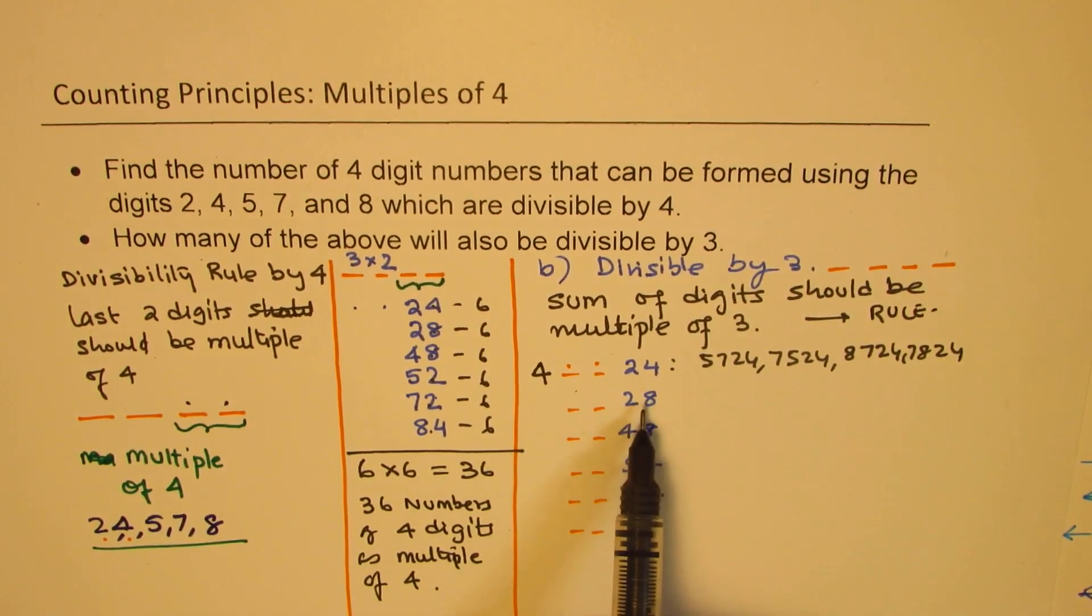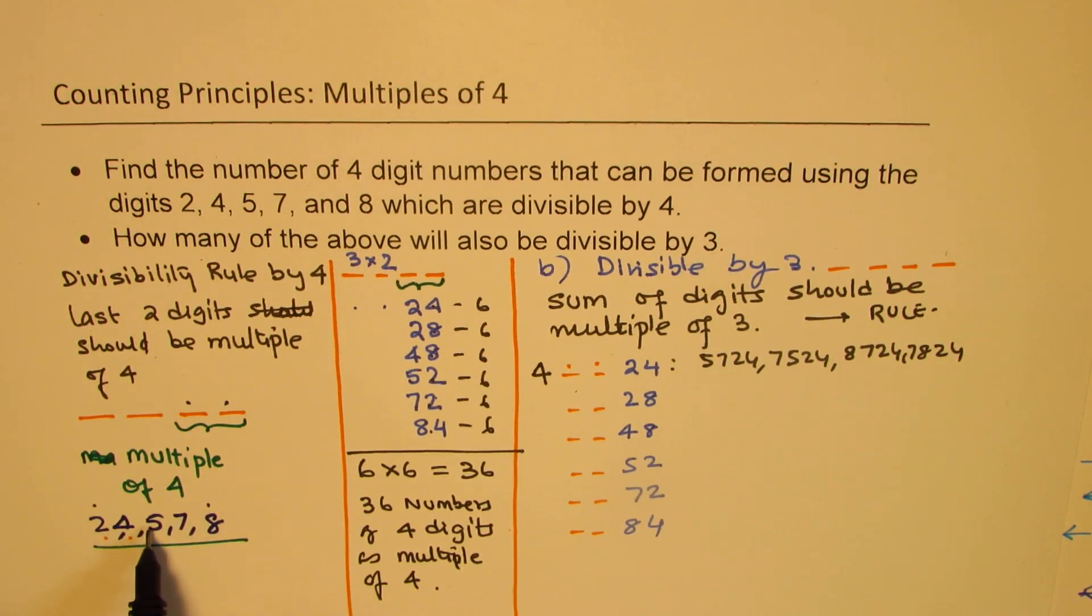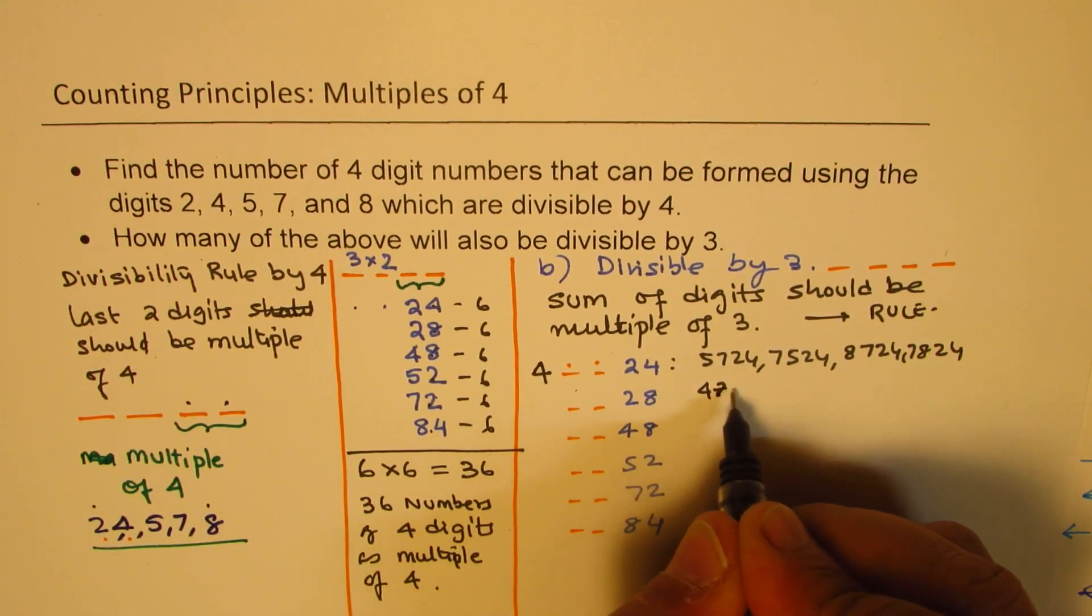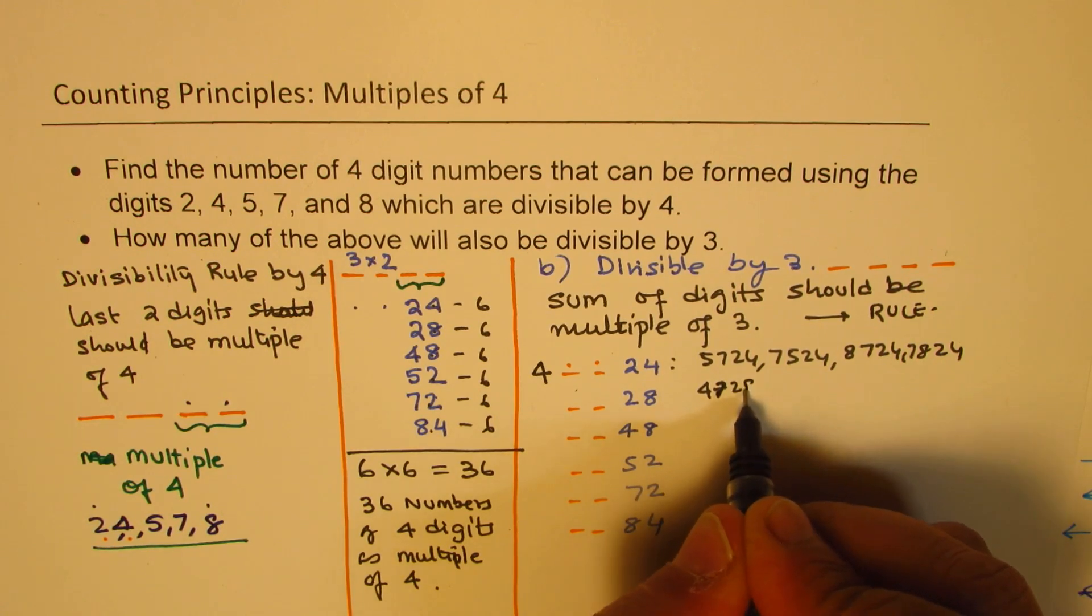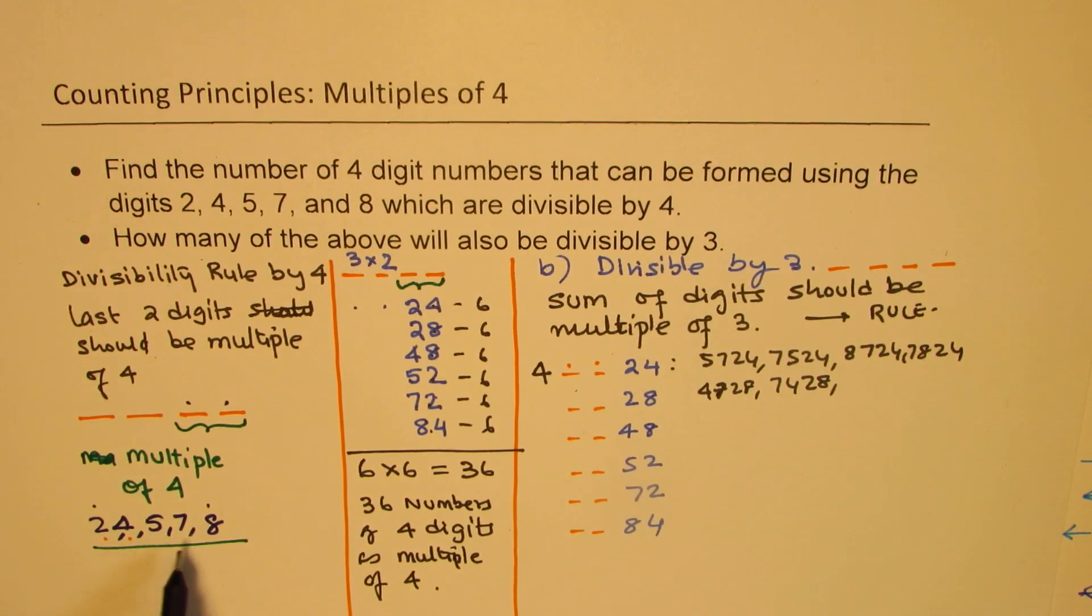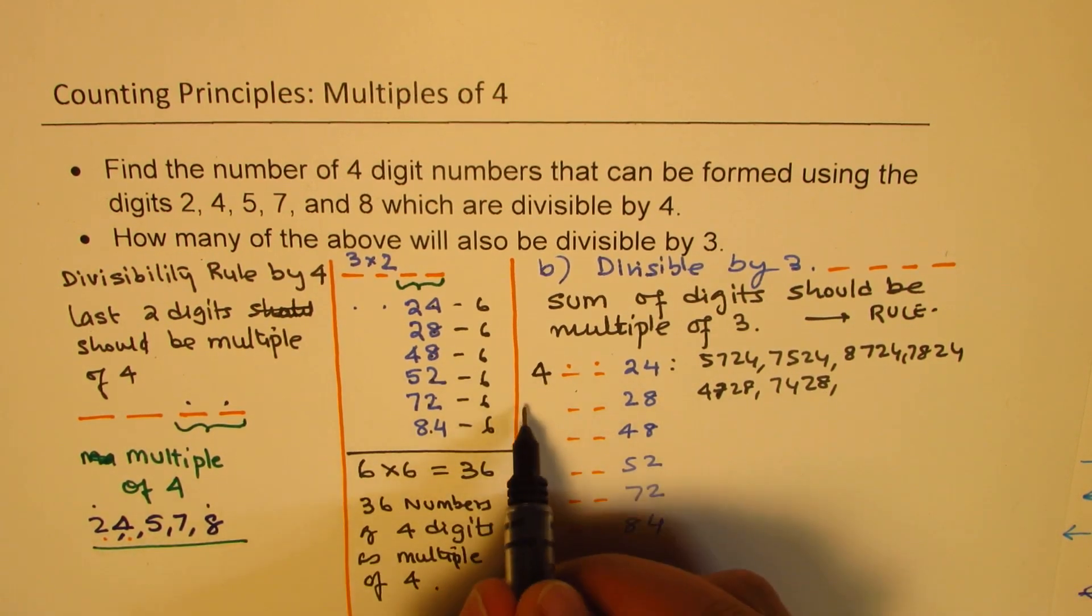Now let's look into 28. Sum of 28 is 10. So if we take away 28, we are left with these. So 10 plus what? 4 and 5 is 9, that is not. 4 and 7 is 11. 10 plus 11 is 21. That works. So we have 47, 28, and 74, 28. That is one possible. Now, 8 and 5 is 13. 13 plus 10 is 23, which doesn't work. So these are the only two numbers. We get 2.